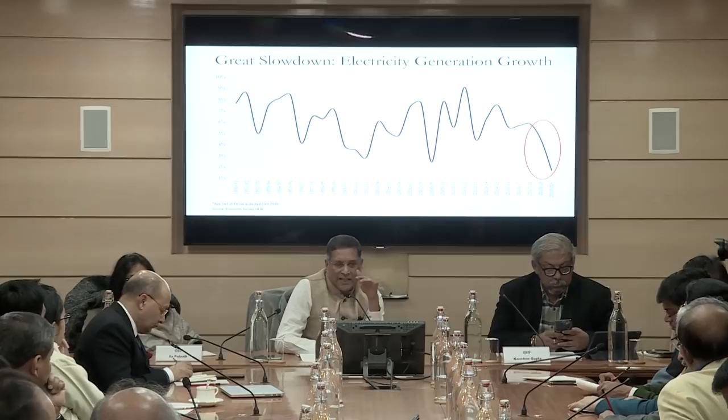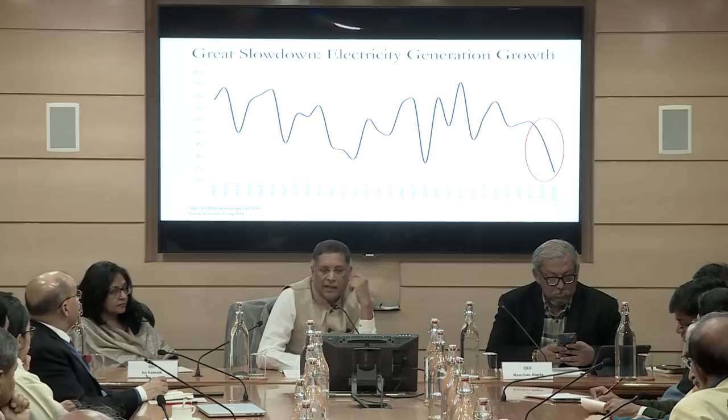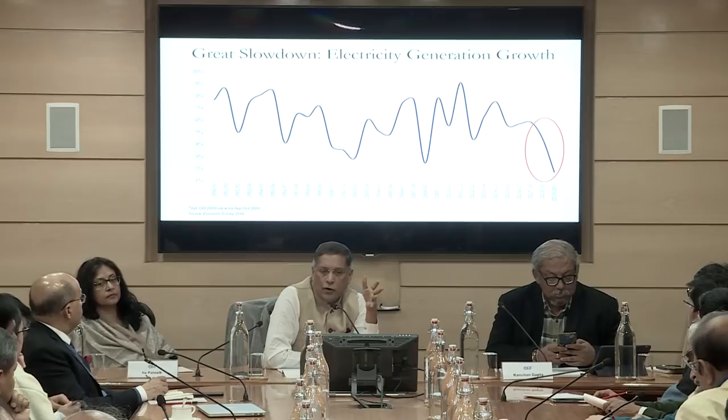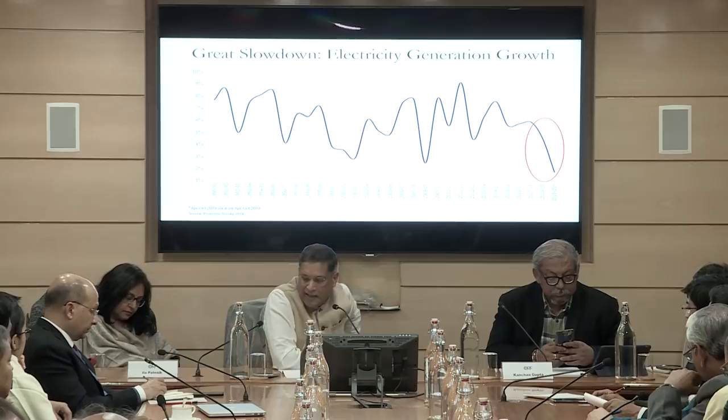Looking at this electricity generation growth chart, in the first seven or eight months it's unprecedentedly low. The last few months it's been in negative growth territory, which has never happened before. One should treat the latest numbers with caution because of some contamination by regulatory changes, but even so the picture is very telling. This is the sense in which we say this is not just any slowdown — this is a great slowdown, because we haven't seen anything like this for a very long time, where underlying indicators are in such poor territory.